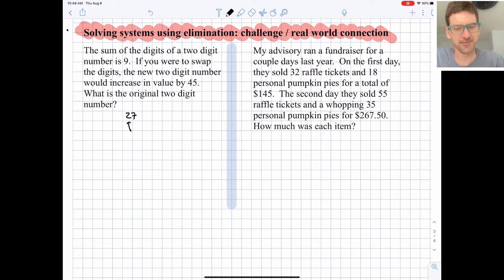So let's have, when we define our variables, let's let x be the tens digit, and let's let y be the unit digit, the ones digit. So I think we can see from our first statement that x plus y has to be 9. We're just adding the two digits together.